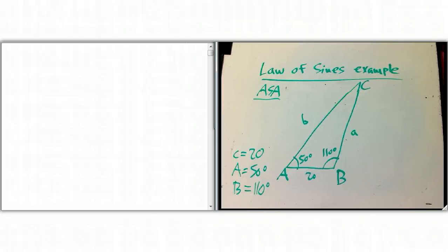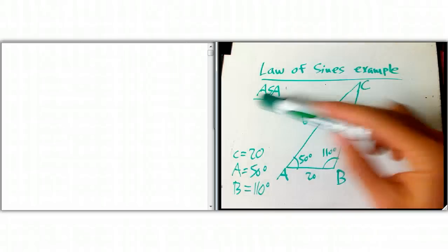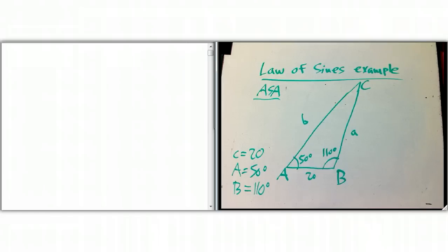Okay, here's an example of the law of sines. It's an ASA example. AAS is very easy to do with the law of sines as well, and it's actually even slightly easier than what I'm showing here, so ASA is a pretty good one to look at.